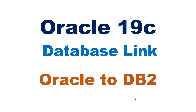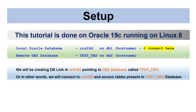In this tutorial we will learn how to set up a database link from Oracle to DB2. This tutorial is done on Oracle 19c running on Linux 8. I have a local Oracle database called ora19d hosted on db1, and a remote DB2 database called test_db2 hosted on db2 — don't confuse the hostname db2 with the DB2 software. We will be creating a DB link in ora19d pointing to test_db2.